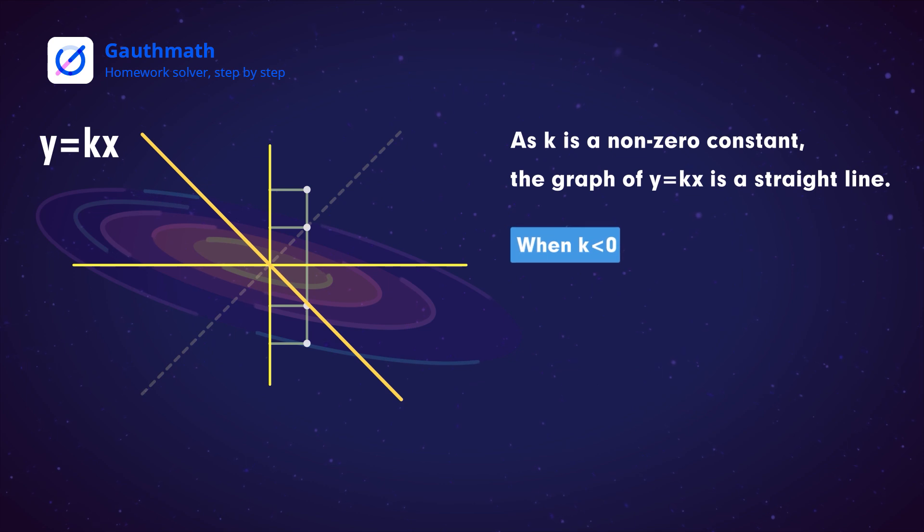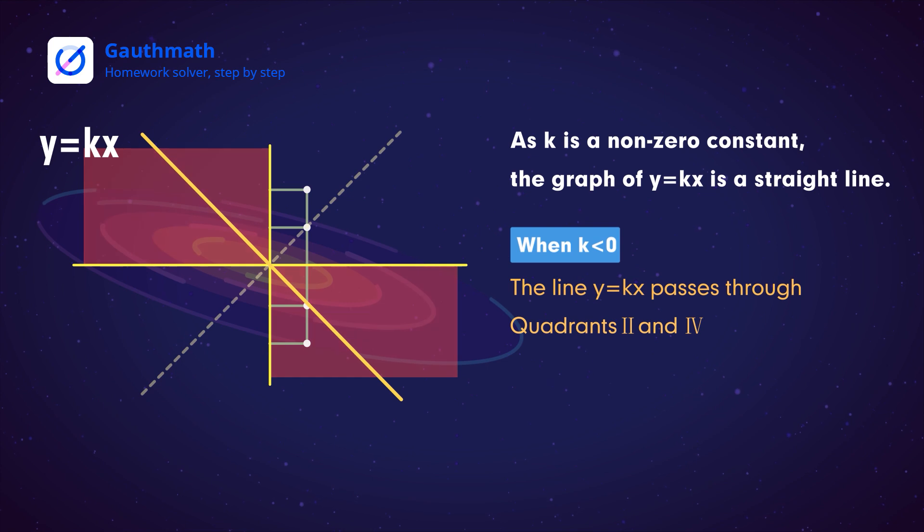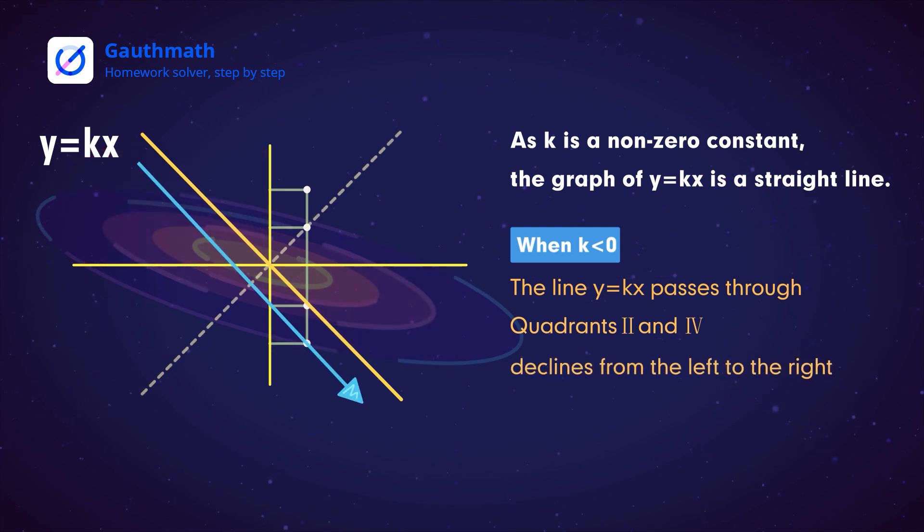If K is negative, the line Y equals KX passes through the second and fourth quadrants and declines from left to right, meaning Y decreases as X increases.